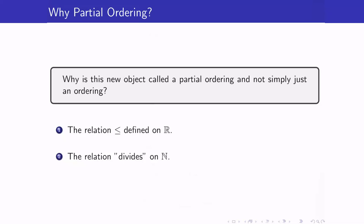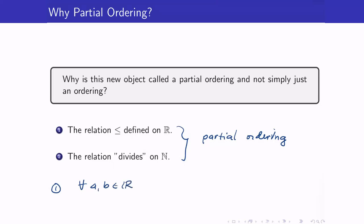Why is this called a partial ordering and not simply an ordering? Consider the relation less than or equal to on N versus divides on N. Both are partial orderings. However, for less than or equal to, any two arbitrary real numbers can always be compared — it's either A ≤ B or B ≤ A. But for the divides relation, that is not always the case. For example, 3 and 5 are not related: 3 does not divide 5 and 5 does not divide 3.